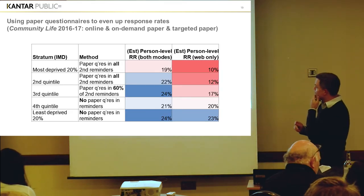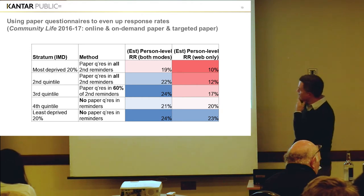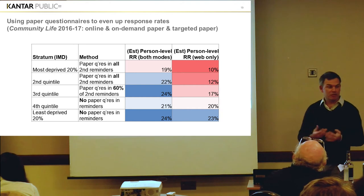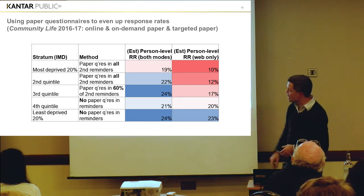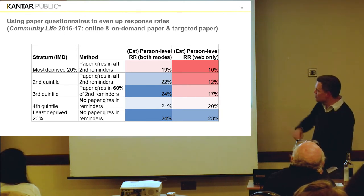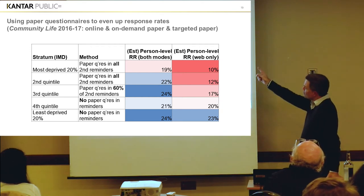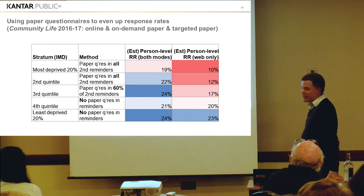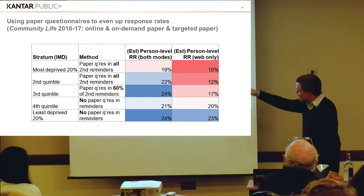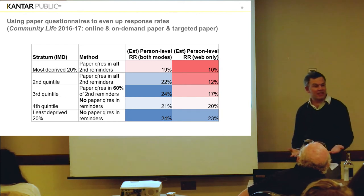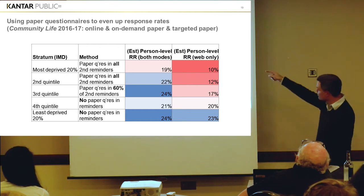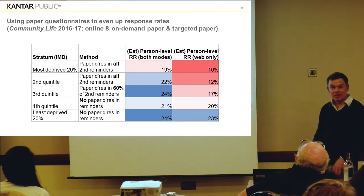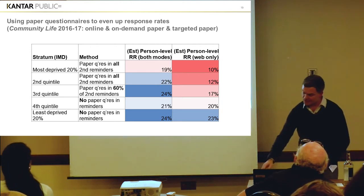Just a quick example of how we use paper questionnaires. The Community Life survey has five strata based on the Index of Multiple Deprivation, from the 20% most deprived to the least deprived 20%. Paper questionnaires go into all of the more deprived areas, a random sample of the middle ones, and none at all in the others. You can see what the person-level response rate is — web only and with both modes. We managed to almost even it up, so the response rate in the most deprived areas was 19% and the least deprived areas 24%. Not a massive amount of variation — but it was 10-23% on the online data alone, which requires a bit more weighting.